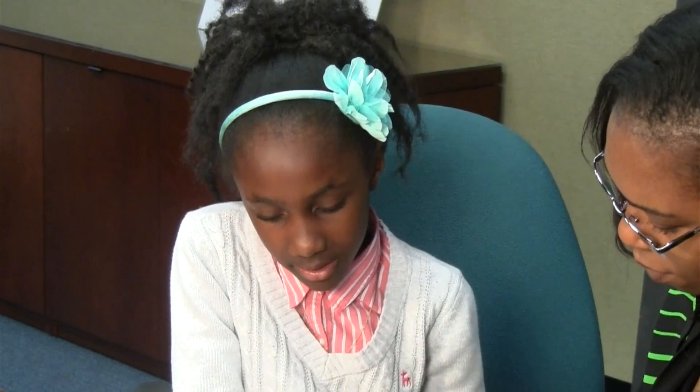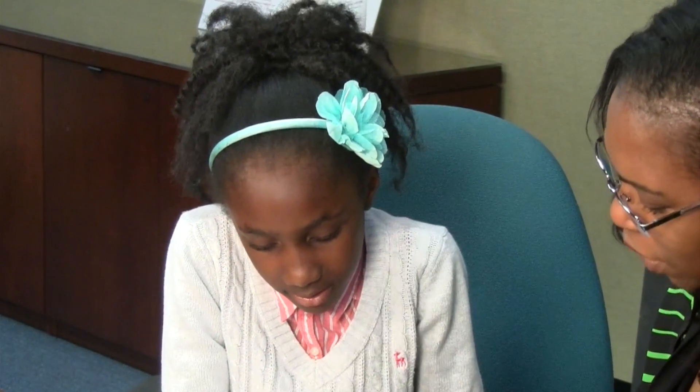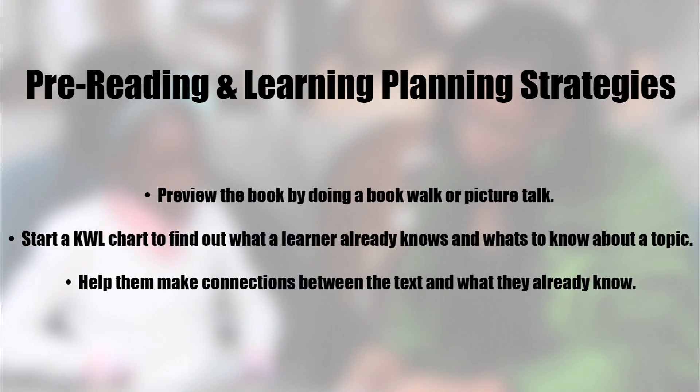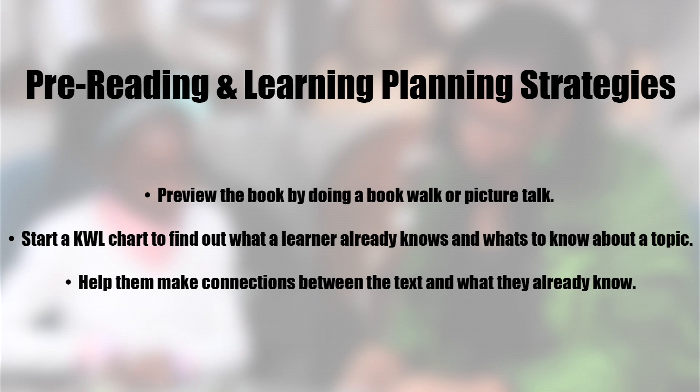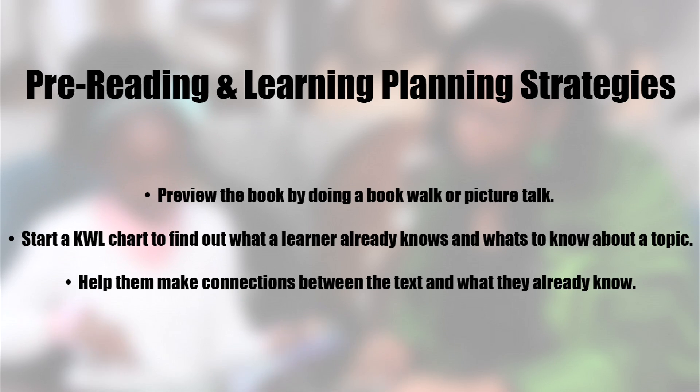Tutors can help struggling readers by having them pay attention to the text. Look over the book or text and get them to talk about what they already know about the text or topic. Talk about the pictures, identify a few key words, and make some predictions. Here are some strategies that tutors can use as they plan for the pre-reading and learning part of the lesson. Preview the book by doing a book walk or picture talk.